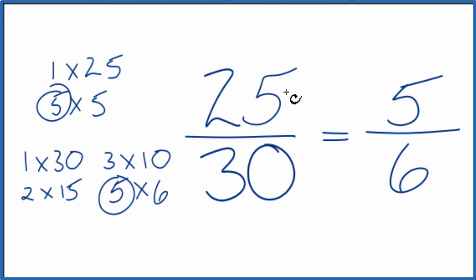It's just that we've reduced or simplified 25 thirtieths down to five sixths. This is Dr. B. Thanks for watching.